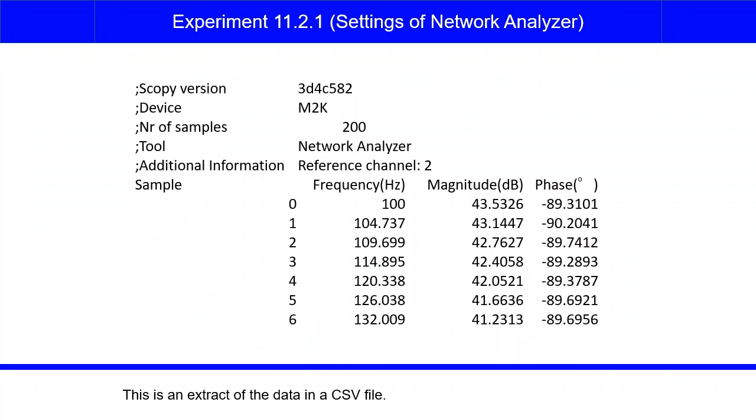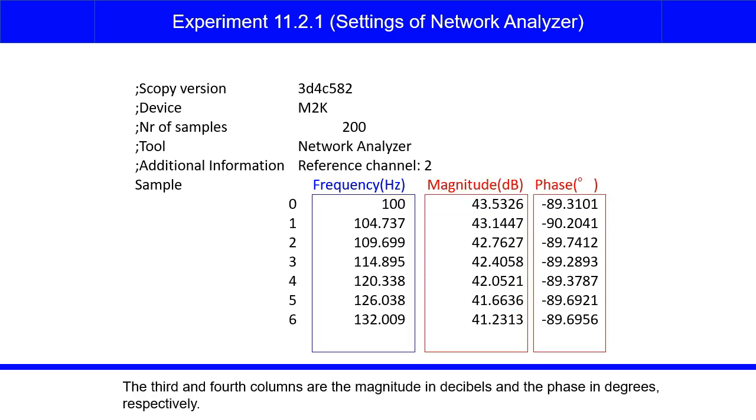This is an extract of the data in a CSV file. The second column from the left is the frequency in hertz. The third and fourth columns are the magnitude in decibels and the phase in degrees respectively.